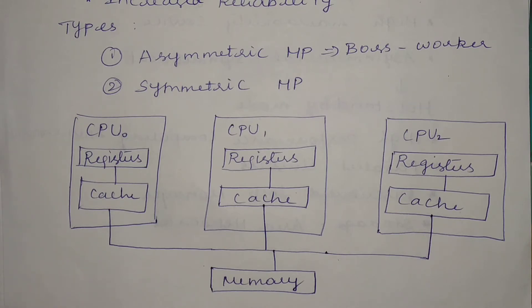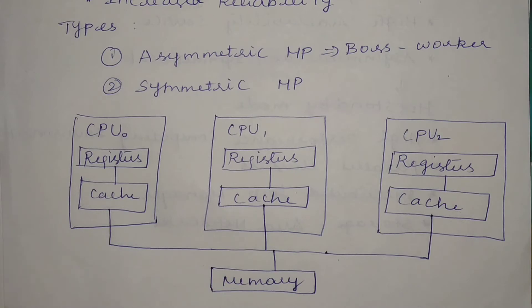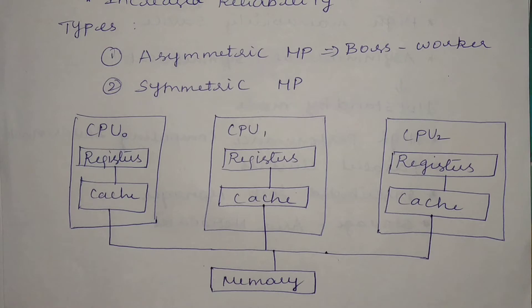Under the multiprocessor system, we discuss two major types and their main advantages. The two major types are asymmetric and symmetric multiprocessing. Asymmetric means there will be a boss-worker relationship, also named as master-slave relationship, which means one processor acts as a master and all other remaining processors act as slaves. The master processor allocates or assigns tasks to each and every processor, and whichever task a slave processor receives, it has to work on it.